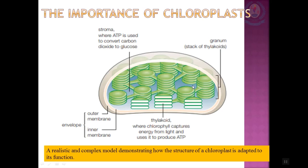The membrane layers are surrounded by a matrix called the stroma. The stroma contains all the enzymes needed to complete photosynthesis and produce glucose. Glucose can then be used in cellular respiration, converted to starch for storage, or used to synthesize other organic compounds such as amino acids and lipids.